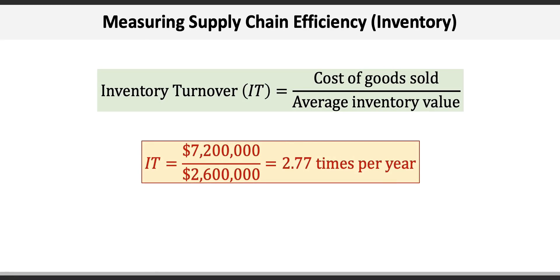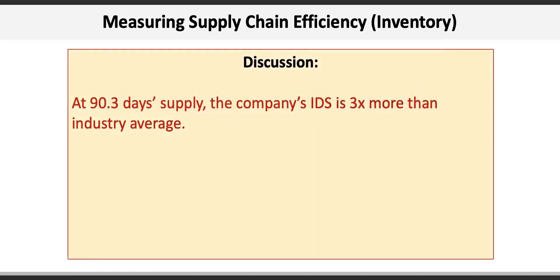That's actually pretty low inventory turnover. For the interpretation of our results: the day supply of 90.3 days, or basically 3 months supply, is over 3 times the industry average of 30 days. That's a lot of inventory.